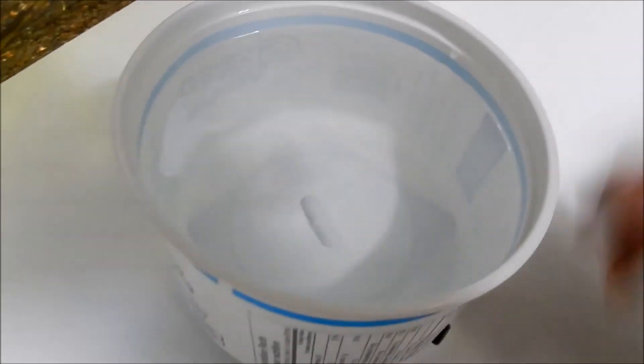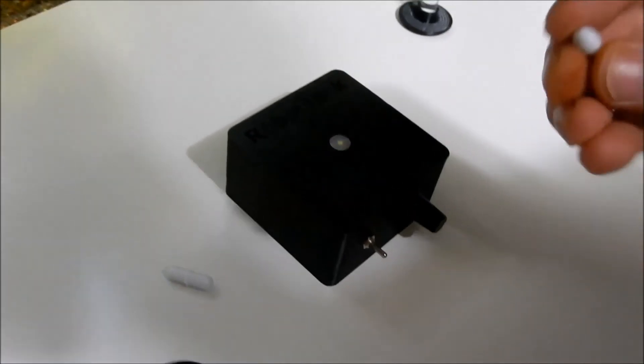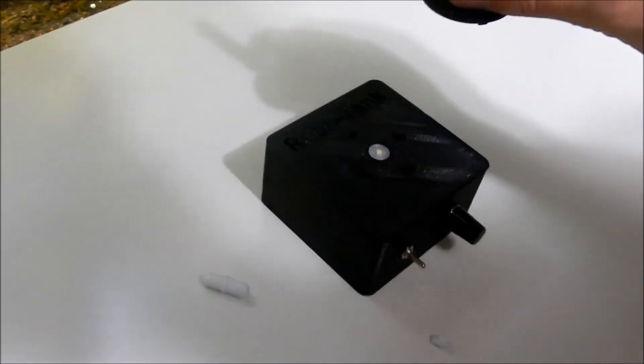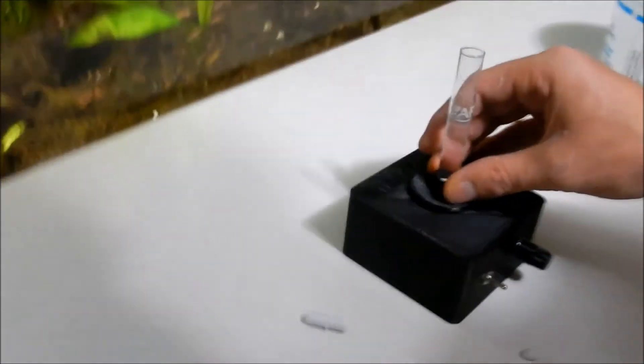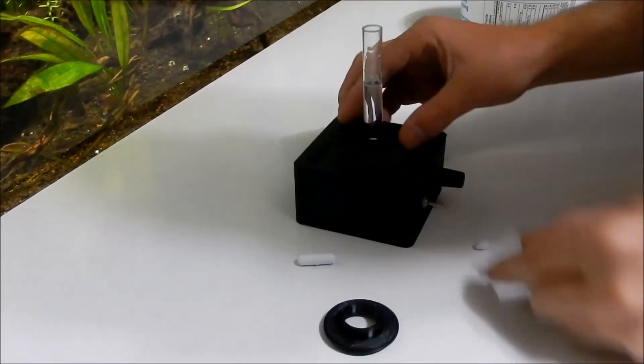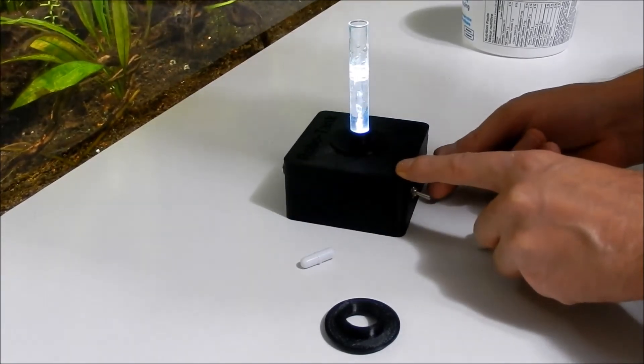So that's basically that. So with the kit you'll get one of these 25mm stir bars. This little 5mm or 10mm stir bar, which fits nicely in this API test tube. Put this down. Stick that on there. Turn it on. And we're in business.